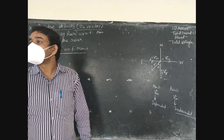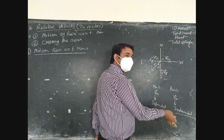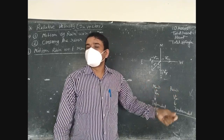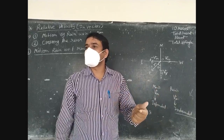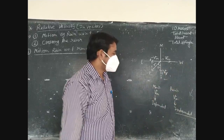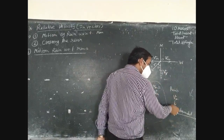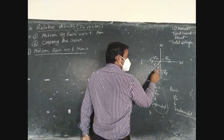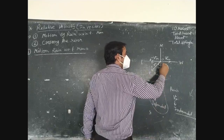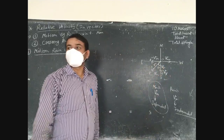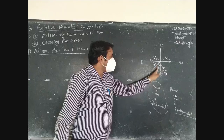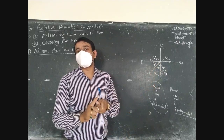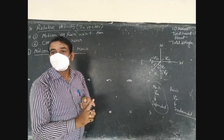For calculating this direction, you have velocity of man and velocity of rain, which means along with theta you have the base, and opposite to theta you have the perpendicular. In a right angle triangle with base and perpendicular, the trigonometric ratio needed to calculate is tan theta.